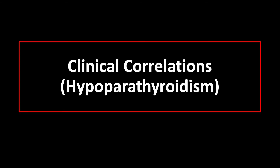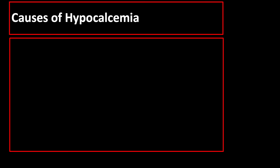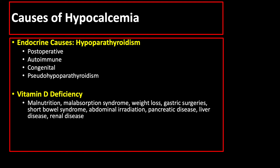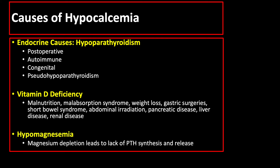The next clinical correlation is hypoparathyroidism. The causes of hypocalcemia are divided into three groups: endocrine causes of hypoparathyroidism, which may be postoperative, autoimmune, congenital, or pseudo-hypoparathyroidism; vitamin D deficiency; and hypomagnesemia, since magnesium depletion leads to lack of parathyroid hormone synthesis and release.